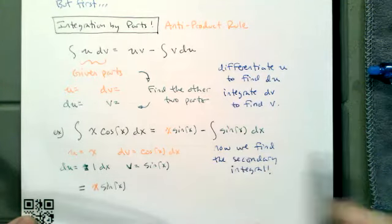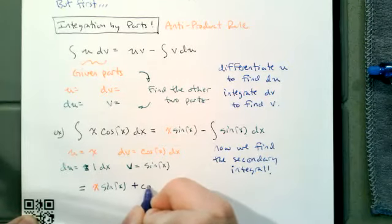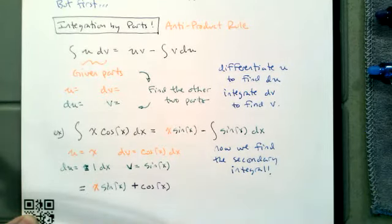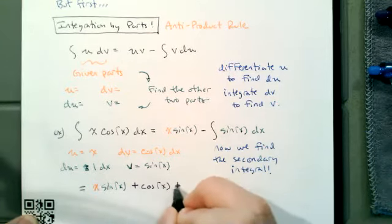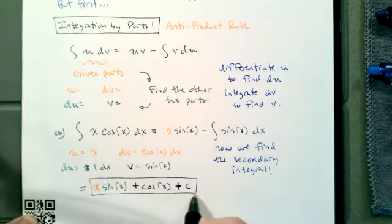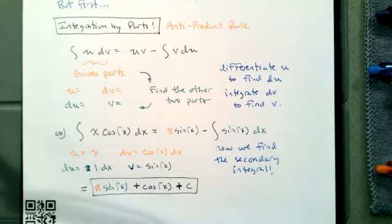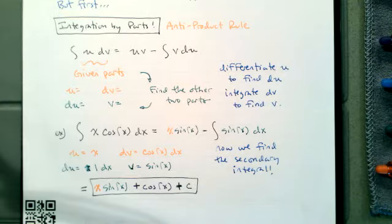The integral of negative sine x is cosine x, because the derivative of cosine x is negative sine x. So we still have x sine x from the UV term, and the secondary integral gives us cosine x. Those are the steps in integration by parts: differentiate U, integrate dV to find V, plug things into the formula, then evaluate the secondary integral.